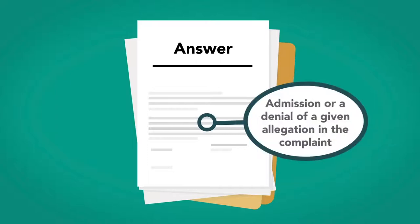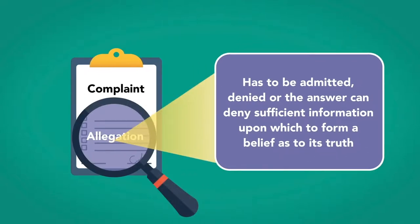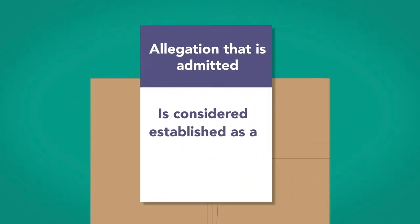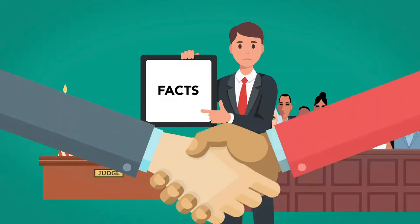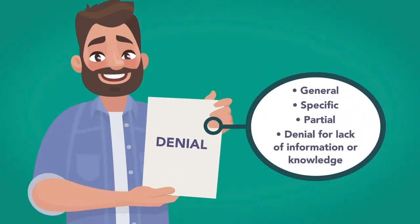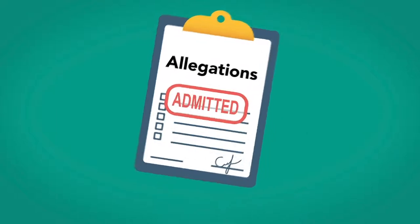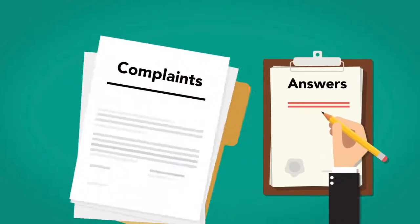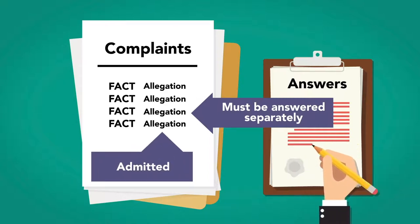Responsive Answers. A responsive paragraph in each answer is an admission or a denial of a given allegation in the complaint. Every allegation in the complaint has to be admitted, denied, or the answer can deny sufficient information upon which to form a belief as to its truth. Any allegation that is admitted is considered established as a binding judicial admission. Often, allegations like jurisdiction are admitted as a matter of course, but facts may also be admitted as a matter of good faith. Denials must be made in good faith. A denial can be general, specific, partial, or a denial for lack of information or knowledge. If an allegation is not addressed, except for the amount of damages, that allegation is considered to be admitted. Drafting answers carefully is critical, as every stated fact in the complaint — from jurisdiction to each fact in the case — is a separate allegation that must be answered separately or it is considered admitted and cannot be later denied.